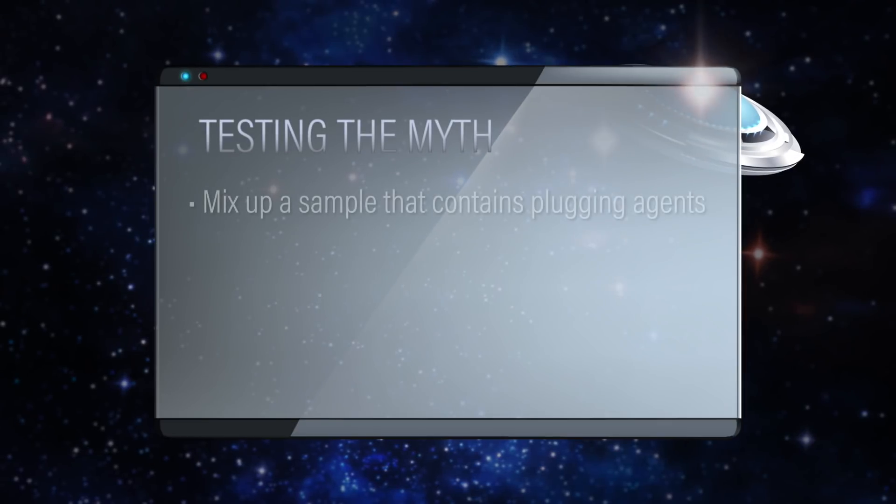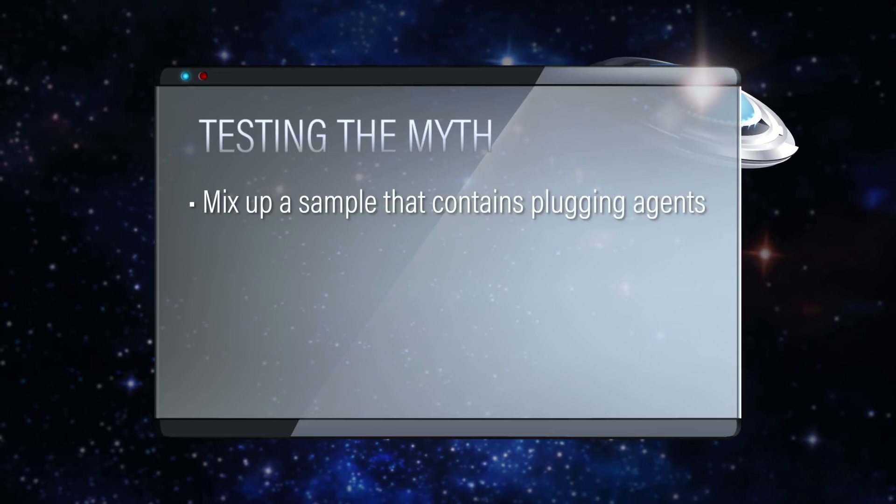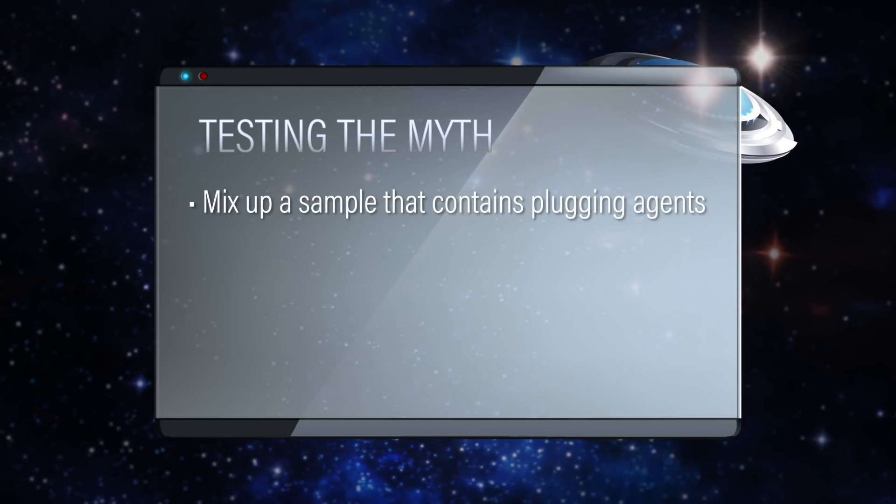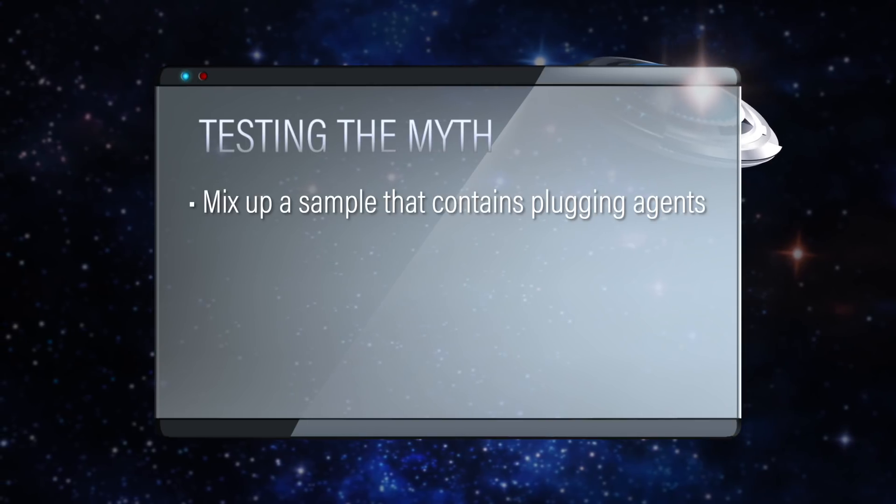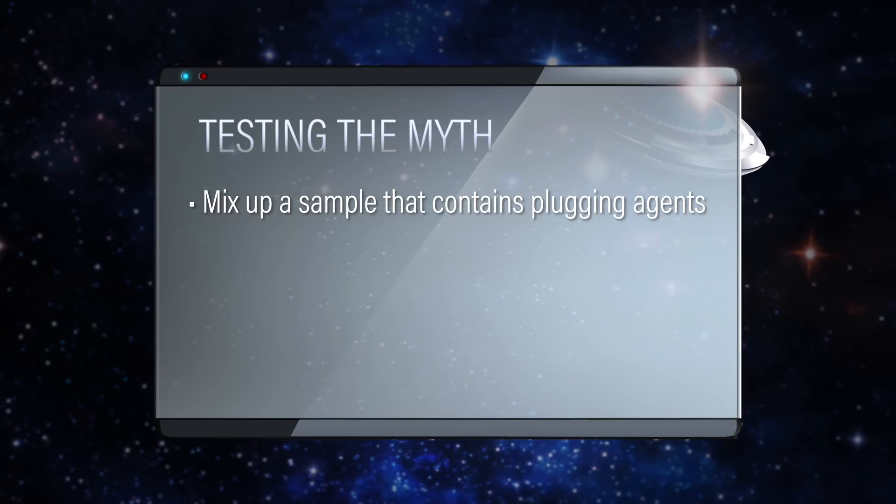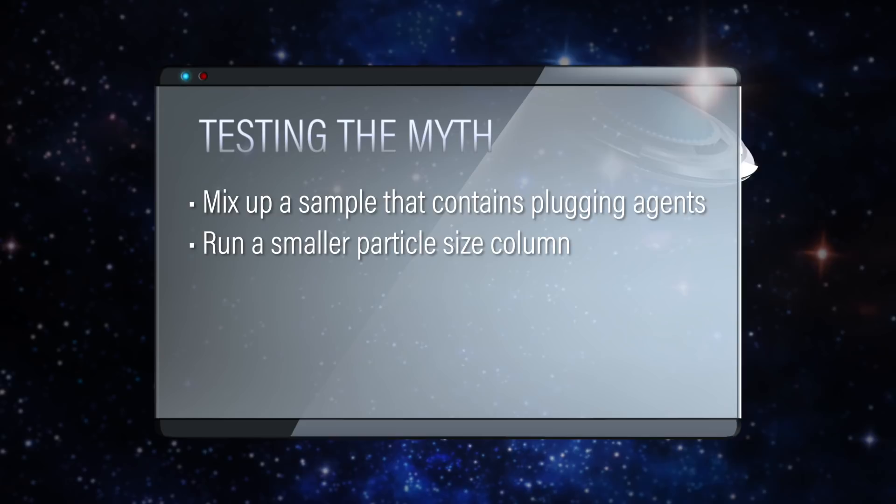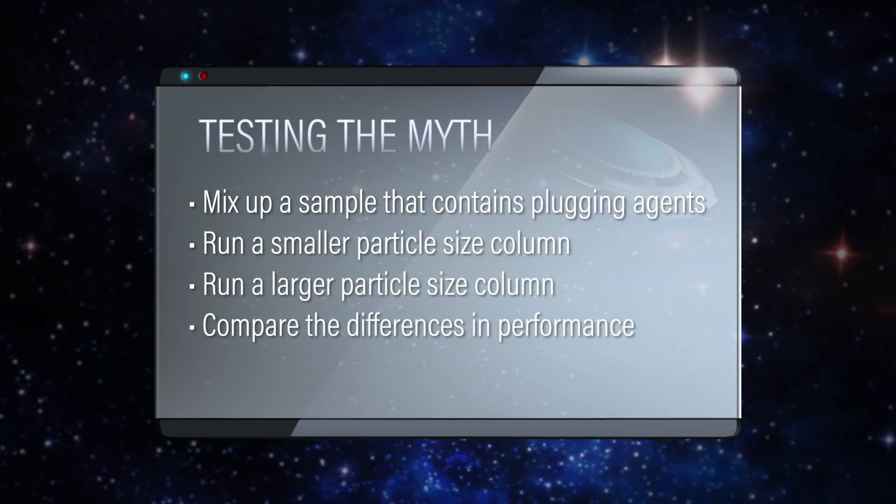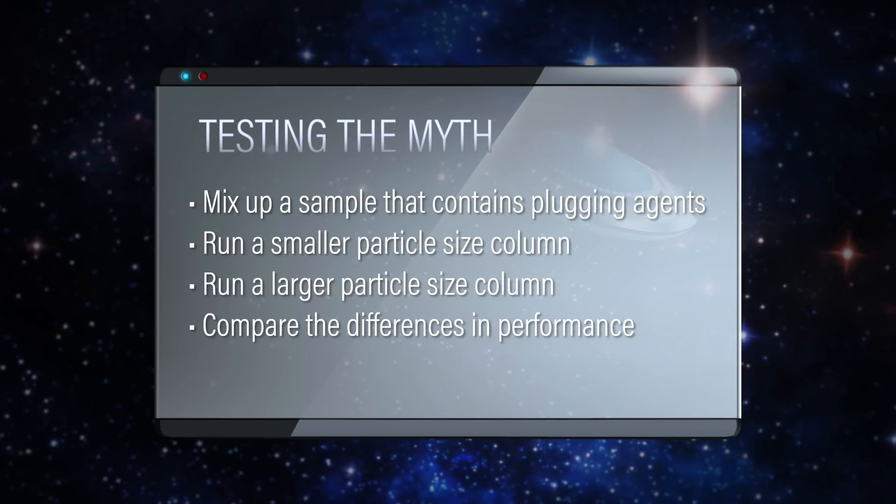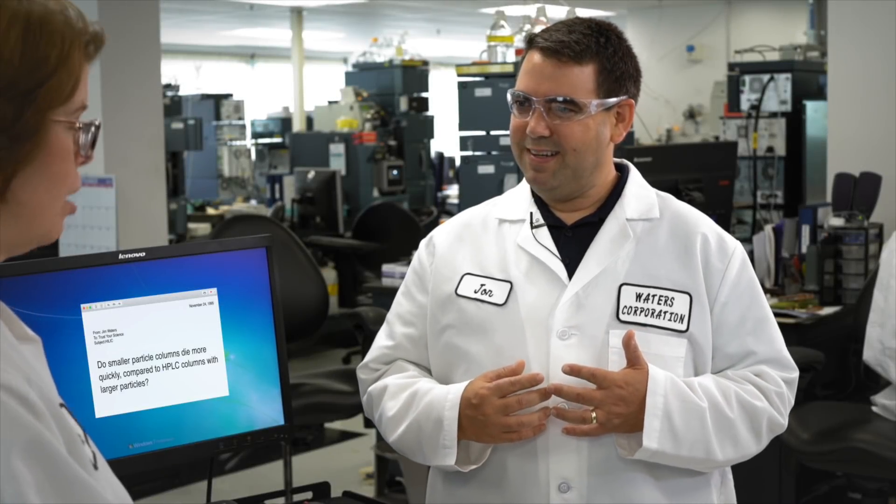How do you want to test it? How about we mix up a sample, something that has some things in it that clog up a column. We could run two columns, a smaller particle size column and a larger particle size column and then see what the difference is in performance. Sounds great. Let me make up the sample. Let's go.